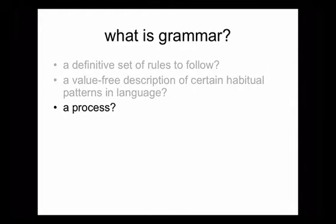Some people, notably Diane Larson Freeman and Scott Thornberry later, started to describe grammar not so much as a thing — a descriptive collection of terms — but as a process. So in that sense, grammar is not a noun, but a verb. We grammar in the same way that a tree apples, or the planet Earth peoples.